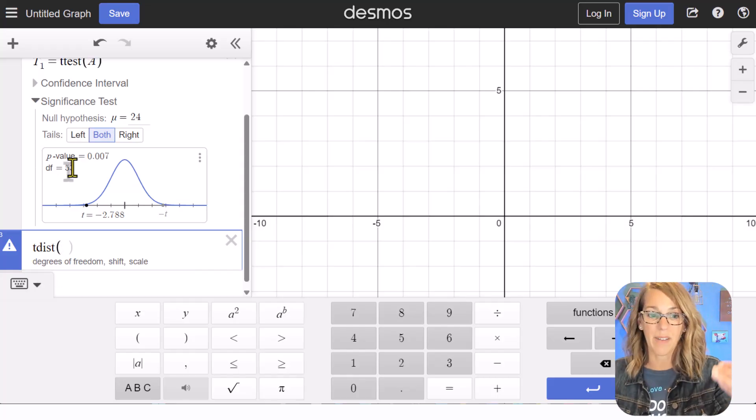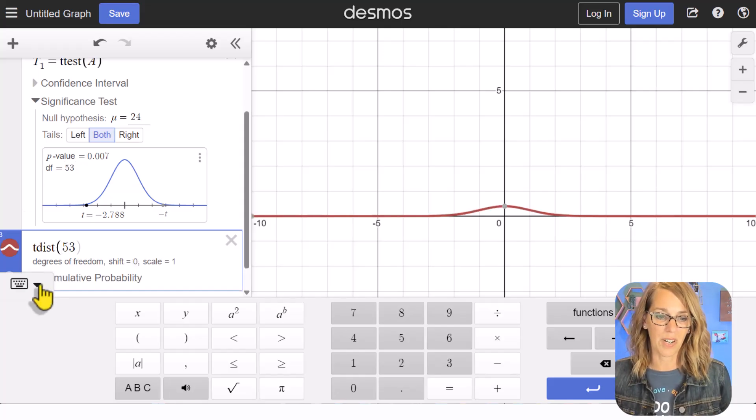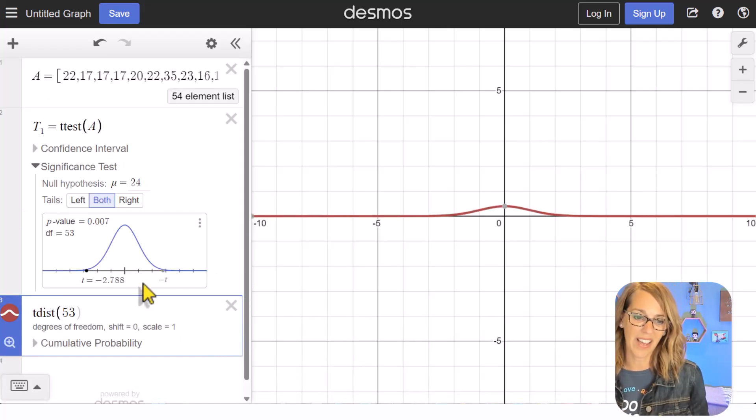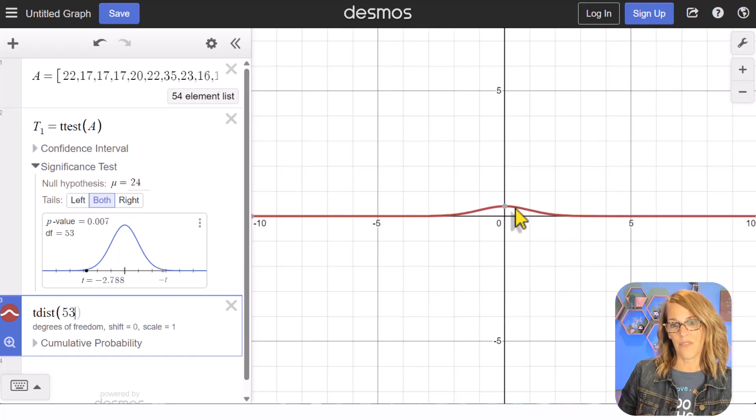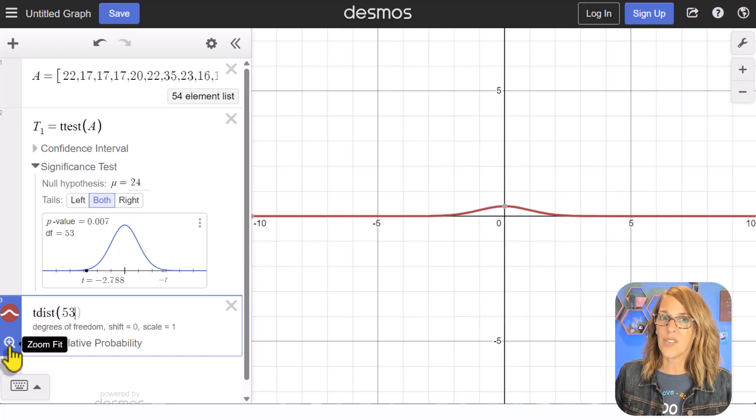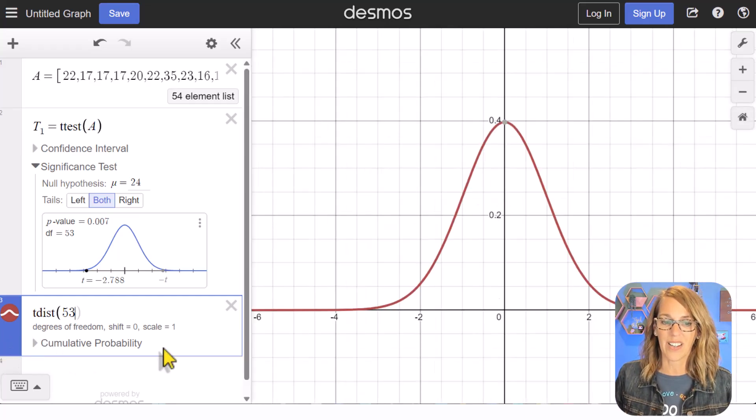It's asking me for the degrees of freedom, and the degrees of freedom is right here, 53, 54 minus 1. So I've got 53 right here for my degrees of freedom. Let's close the keypad and you can see that I've got kind of a funky looking curve here. I'm going to click the zoom fit to get a better looking curve.